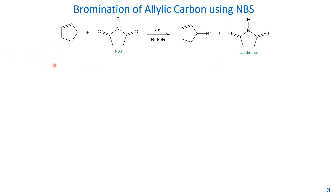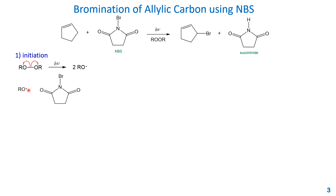The mechanism starts with initiation. The first reaction is the homolytic cleavage of the peroxide assisted by light, generating two alkoxy radicals. This alkoxy radical can then react with NBS, and the single bond between nitrogen and bromine splits into two radicals. The radical on nitrogen combines with the alkoxy radical to form a neutral product, and the other radical is the bromine radical.